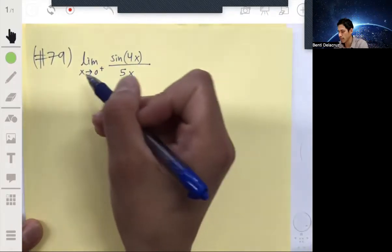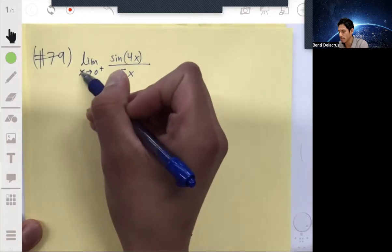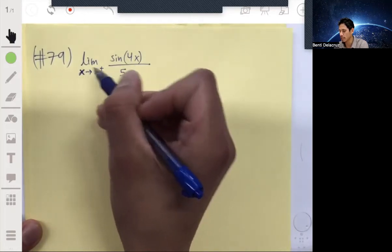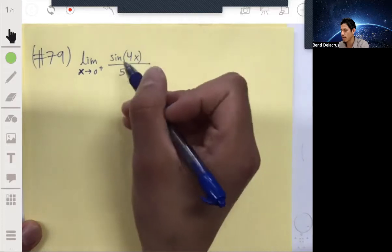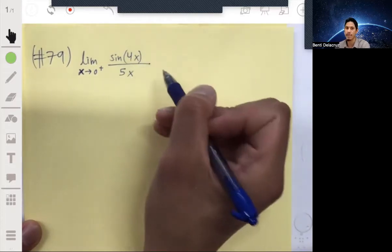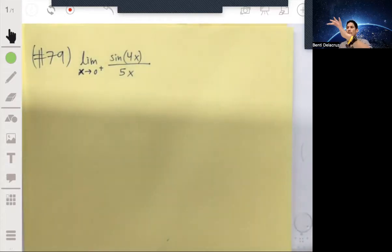Alright, so here we want to find the one-sided limit of this function. We have the limit as x approaches zero from the positive side of sin(4x) over 5x.